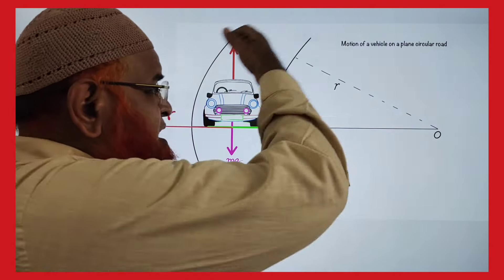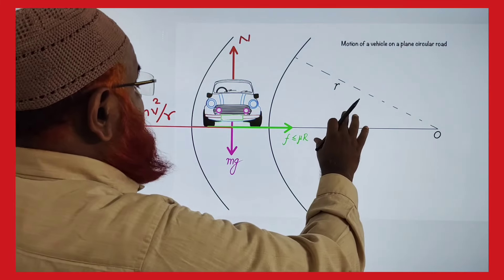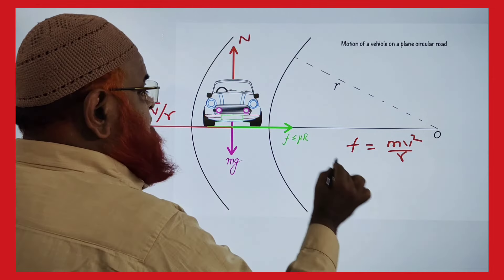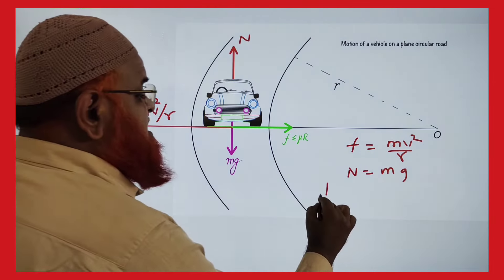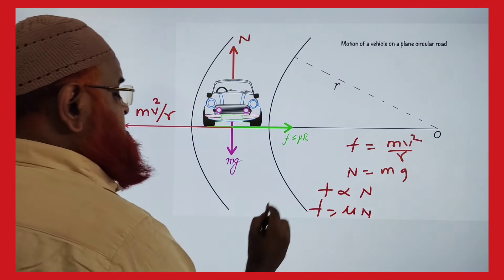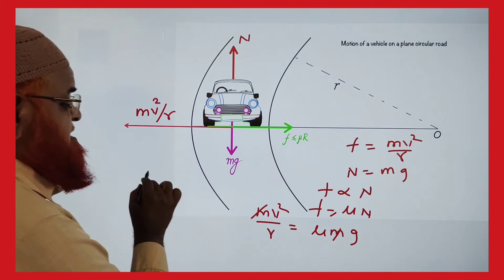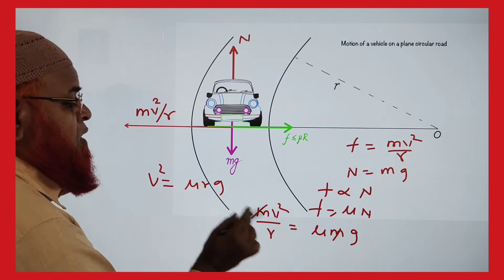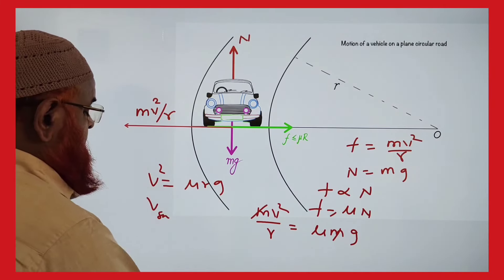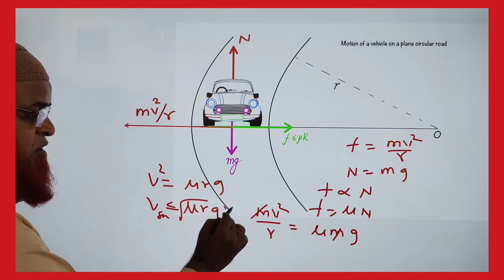For minimum velocity of a car on a circular road so it doesn't skid: friction equals mv²/r, and friction equals mu×N = mu×mg. Cancelling m, v² = mu×r×g. Therefore the safe velocity must be less than or equal to √(mu×r×g).